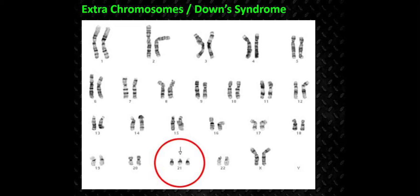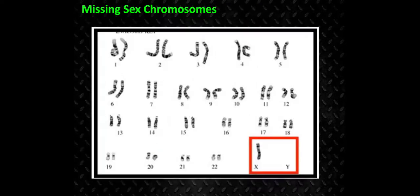Down syndrome is another common mutation where there's three chromosomes at chromosome number 21 — you can see that in this picture. And if a Y chromosome is missing and the person only has one X chromosome, that is another type of mutation. It's the only mutation where a chromosome can be missing and the person survives, but they have serious issues.